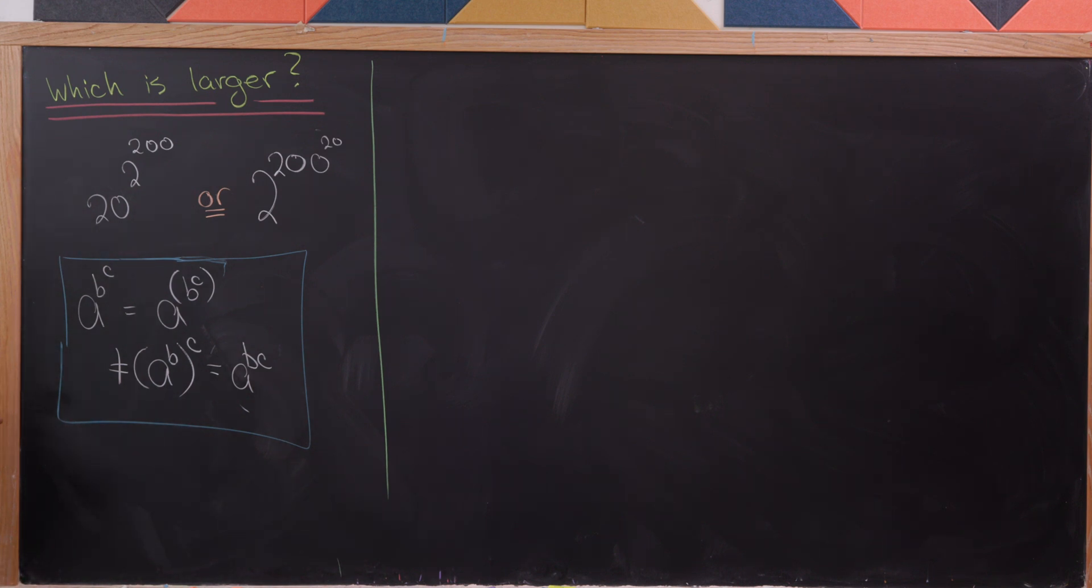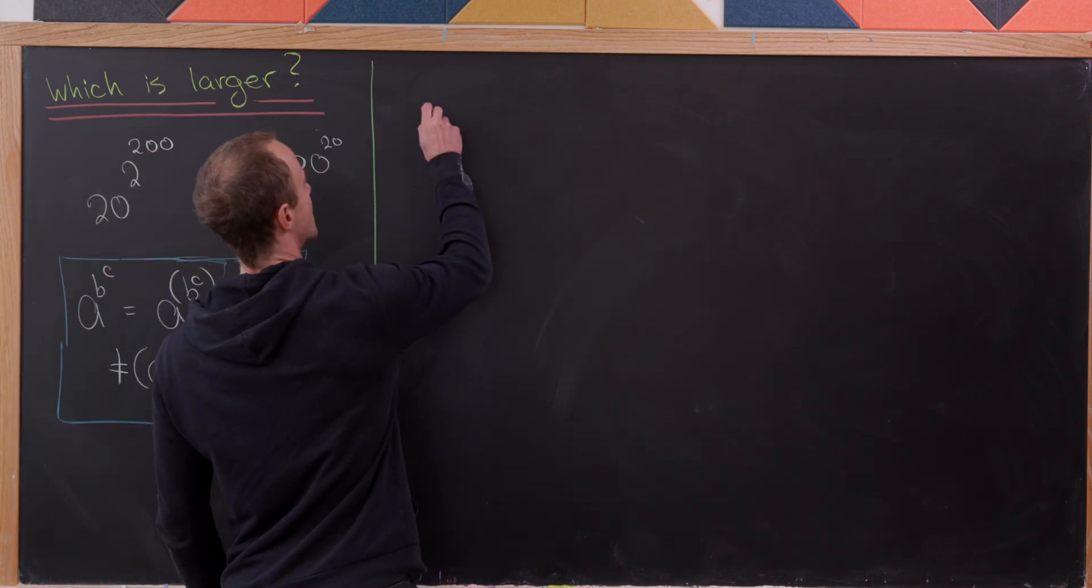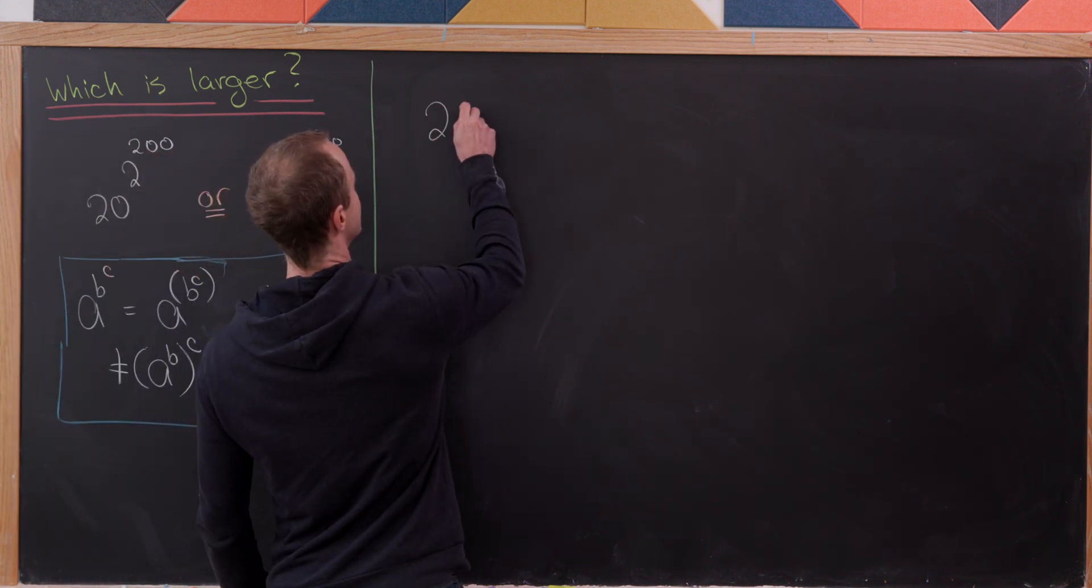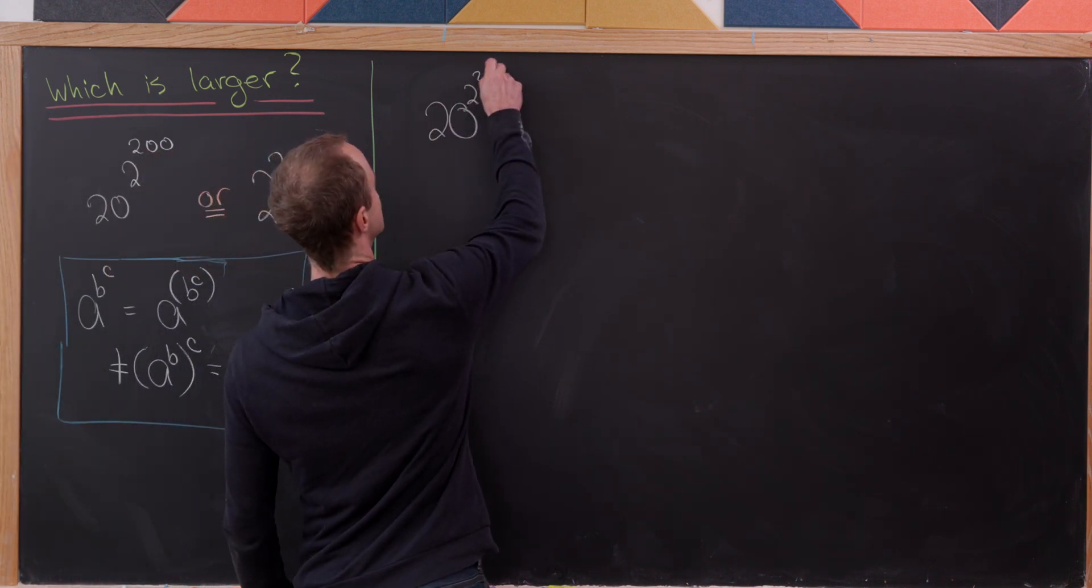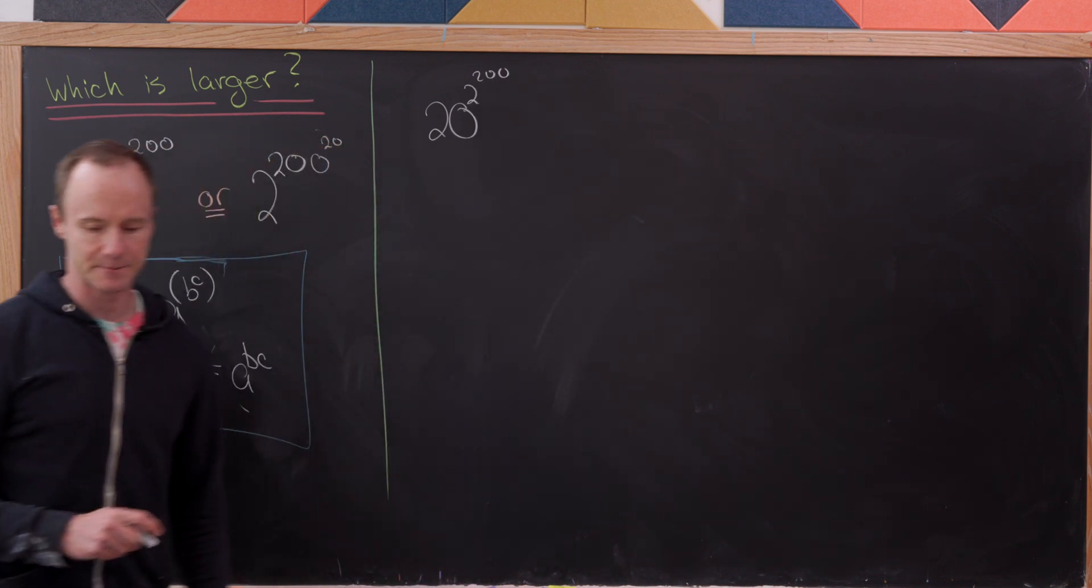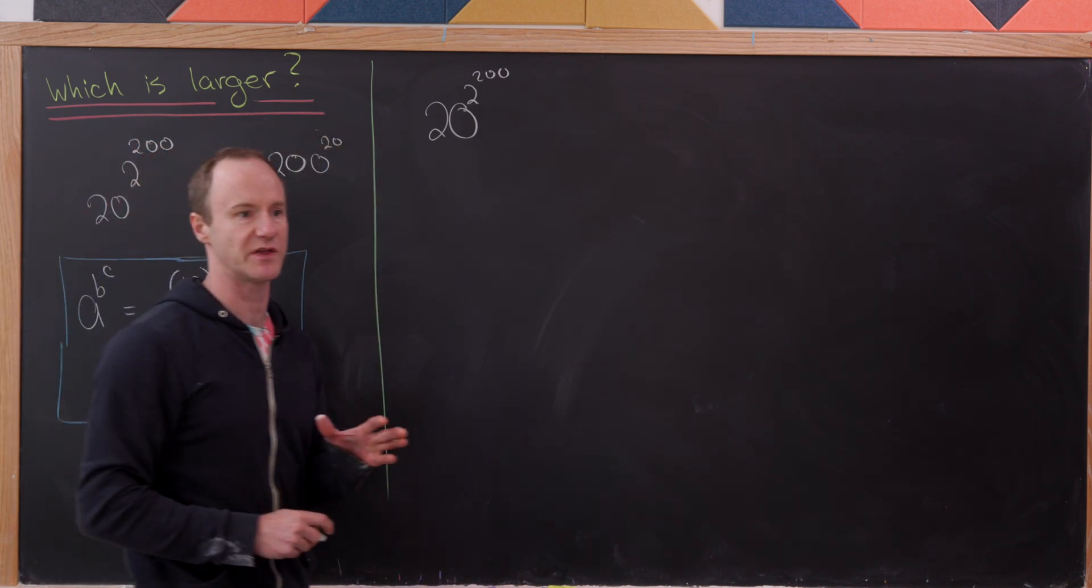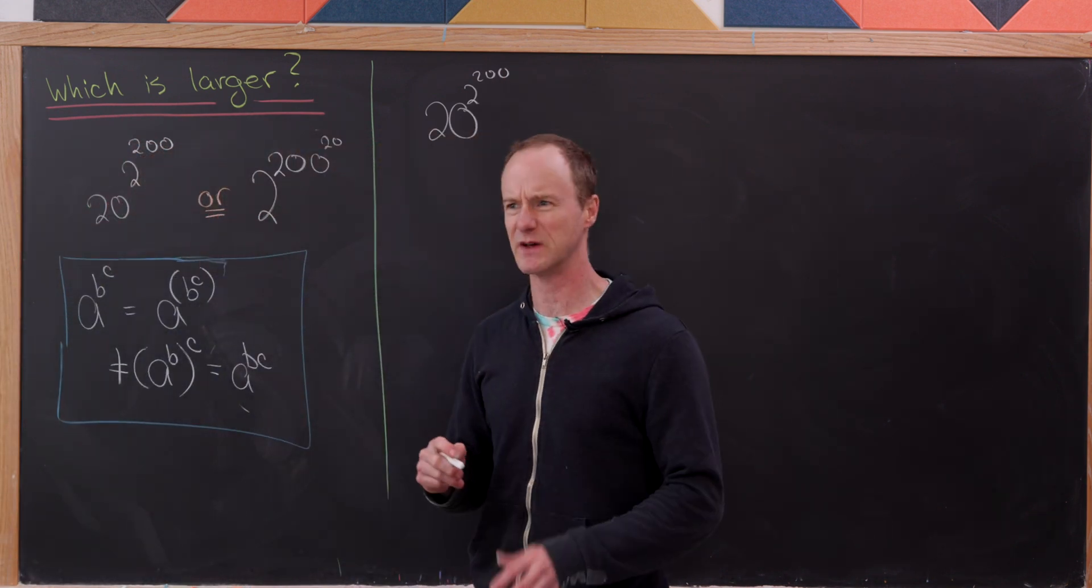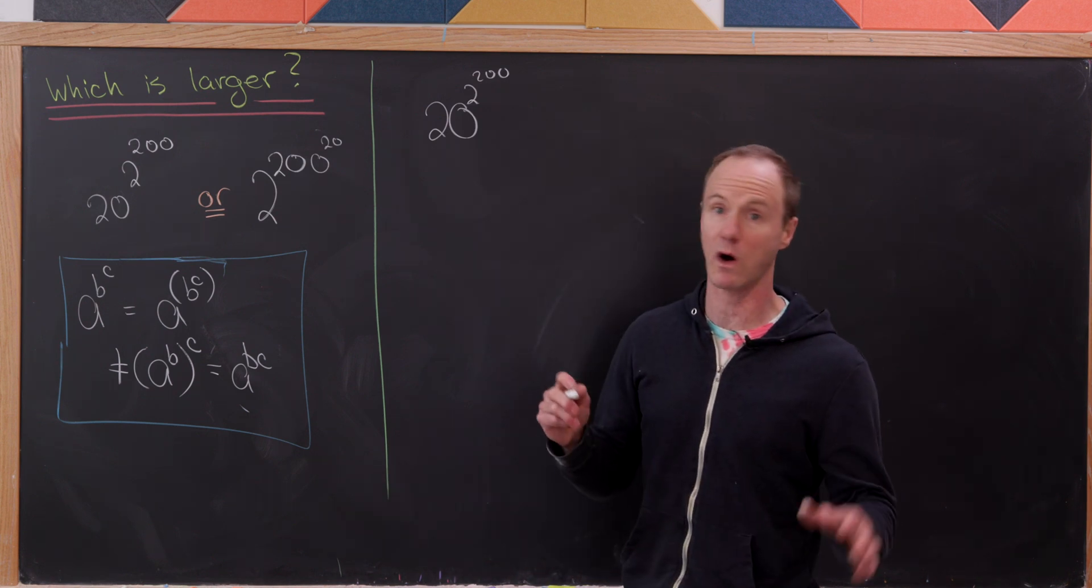Okay, so keeping that in mind, let's get started with our calculation. I'm going to start over here on the left-hand side. So we've got 20 to the 2 to the 200. And I guess we should probably start with a guess. That'll help us do our inequalities.